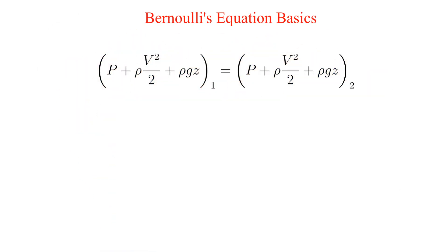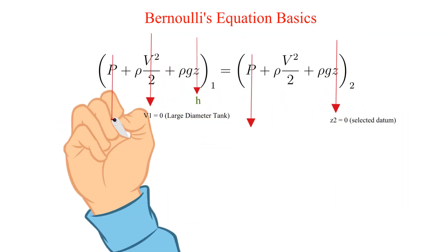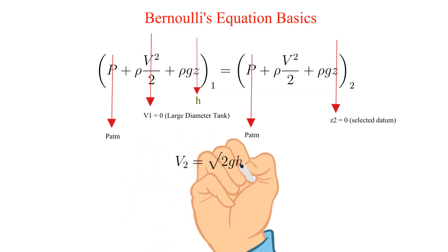Now let's solve for the velocity of the free jet, denoted as V2. First let's simplify with what we already know. Skipping the algebra, we get the velocity at point 2 is equal to the square root of 2 times the acceleration of gravity times H.